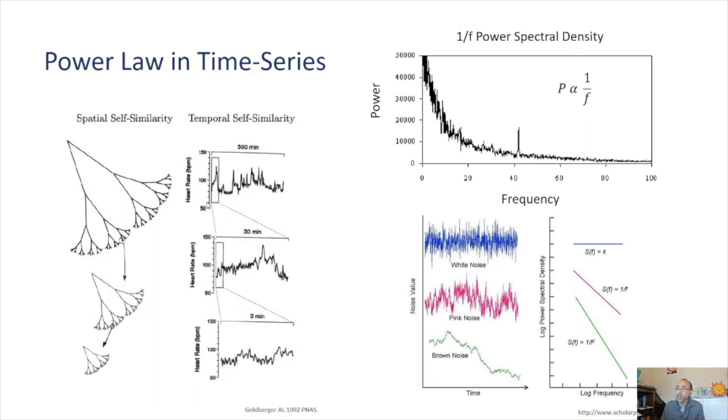In regards to time-based data, the particular relationship that's most important is something called one over f power spectral density. It's one over f because the power is inversely related to the frequencies. The higher frequencies tend to have lower power, whereas the lower frequencies have higher power. And certain types of noises can be categorized according to this relationship. White noise is something that has power spectral densities that's uniform across frequencies, whereas the other extreme is brown noise, which has much more of a lower frequency component. And it's this halfway point between these two, which is called pink noise. And it's this pink noise, one over f, that is of great interest for us.